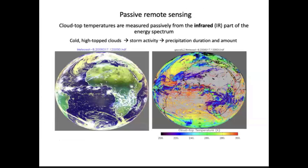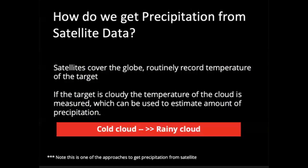Our products use what's called passive remote sensing. Unlike something like radar or LIDAR, which sends a signal out and then bounces back, we're simply taking passive measurements of the infrared energy spectrum. We're typically looking for cold high-top clouds — called cold cloud duration — which is an indication of storm activity from which we can derive the amount of precipitation, the duration, and the amount of a given event.